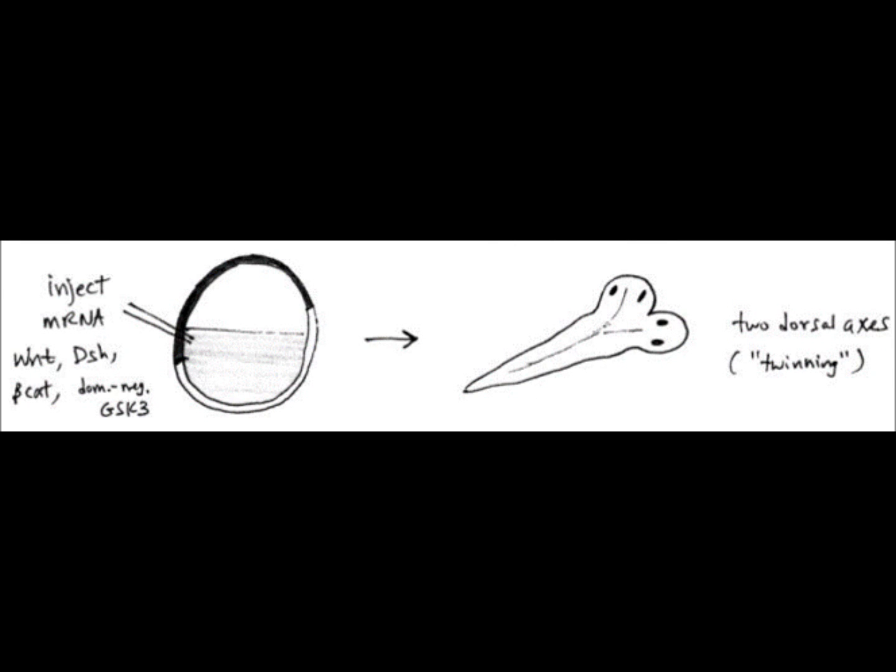Evidence for the role of the Wnt pathway in developing dorsal structures in the Xenopus embryo is shown above. If you inject Wnt or disheveled or beta-catenin or dominant negative GSK3 mRNA into the future ventral site, it will actually cause the development of a secondary dorsal axis, which is shown to the right. You can see how this Xenopus embryo actually contains two dorsal structures, which is the head, eyes, neural tube, and stuff like that.